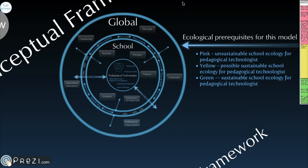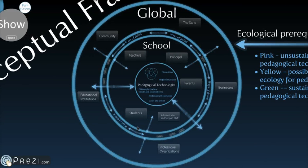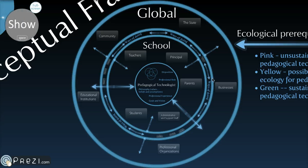In the global ecology, we see different institutional species, including the state, community, educational institutions, professional organizations, and businesses. And of course, the school is one institutional species within this global ecology.